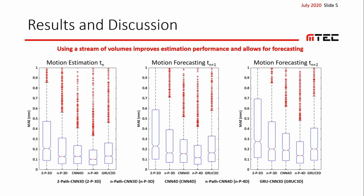Notably, using temporal information improves the estimation performance compared to the previous approach, PathCNN3D. In particular, our novel mixed 3D-4D deep learning approach, PathCNN4D, performs best. Also, our novel deep learning method leads to promising forecasting performance. Using this method, the mean absolute error for forecasting is even lower than the estimation error of PathCNN3D.